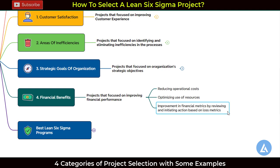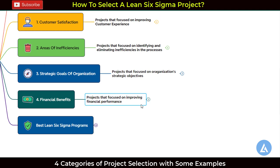These are the four important categories in which you must take your Lean Six Sigma project. I'm sure you now have complete clarity about what a Lean Six Sigma project is and what the four important categories are.